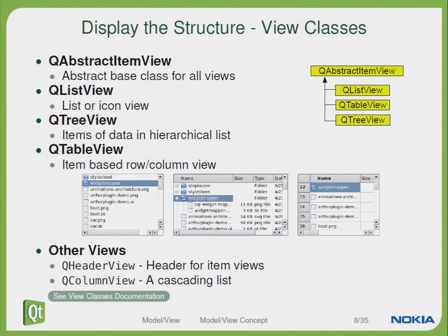Let's take a look at the view classes within Qt. All the view classes are derived from the abstract base class QAbstractItemView. Here we will see a QListView, a QTreeView and a QTableView. There are also other views available in Qt like a QHeaderView which will show some header item views, or a QColumnView which is a cascading list which you might know from macOS. For further information about these classes please take a look at the class documentation within Qt Assistant.